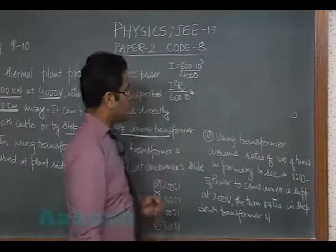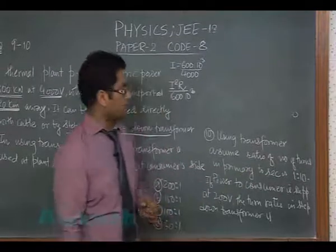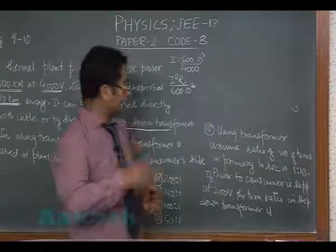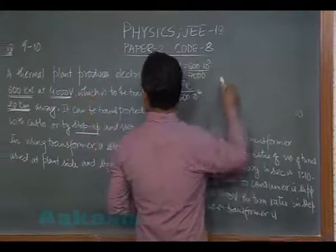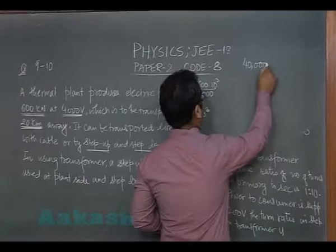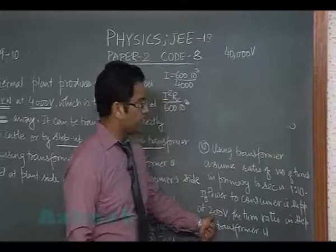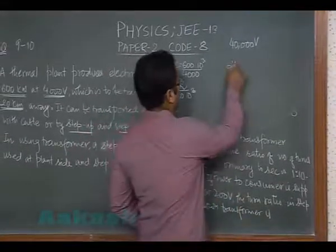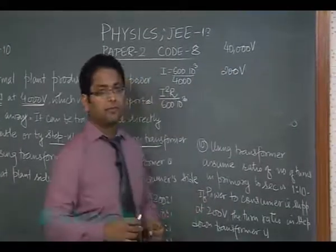Now the 10th part says using transformer, assume ratio of number of turns in primary to secondary is 1:10. That means this is at the power plant - we have increased the voltage. The 4000 volt will now become 40,000 volt. If power to the consumer is supplied at 200 volt...